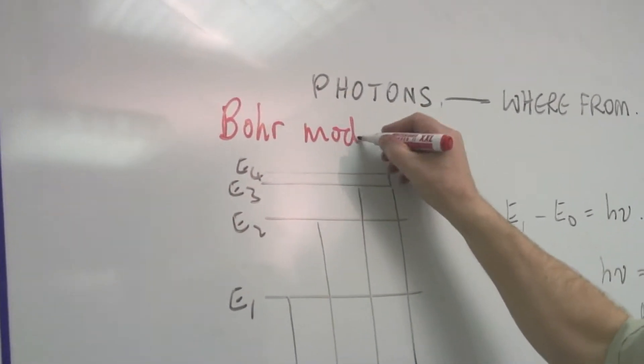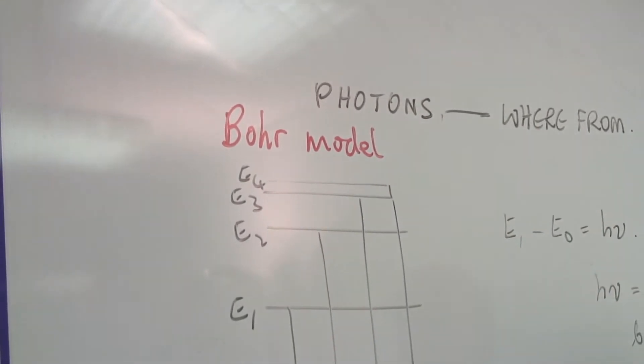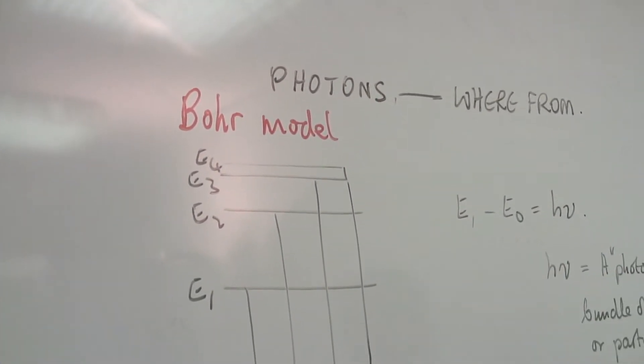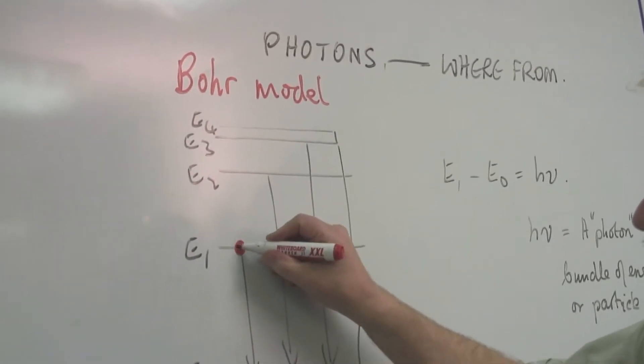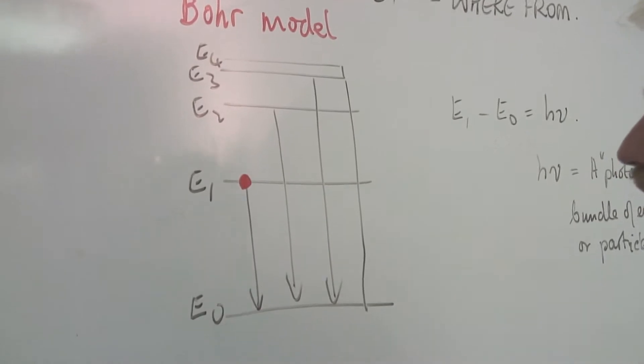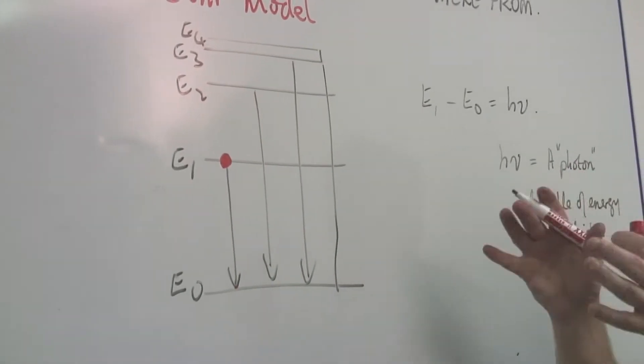So this Bohr model, which was postulated around the 1930s, suggested that electrons, when they fall from one energy to another, can only do so in certain ways. They can only have certain energies.